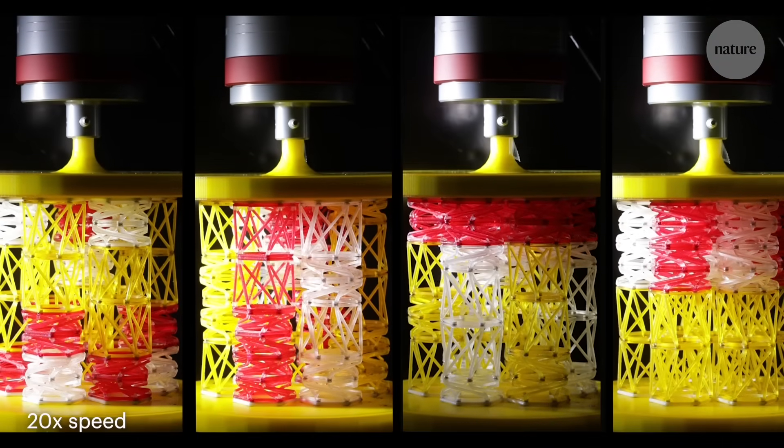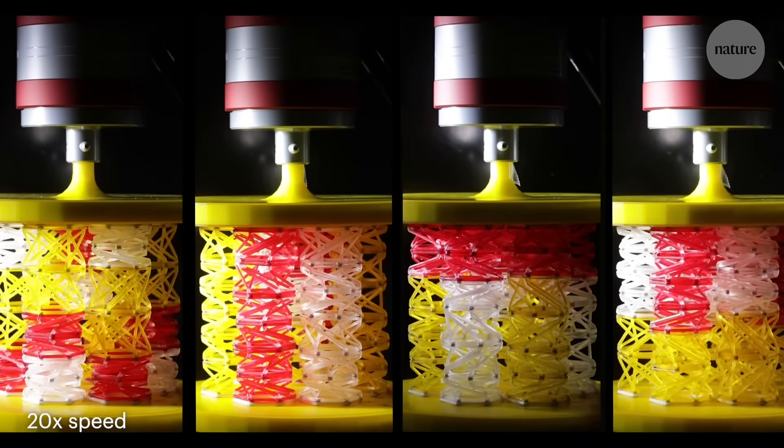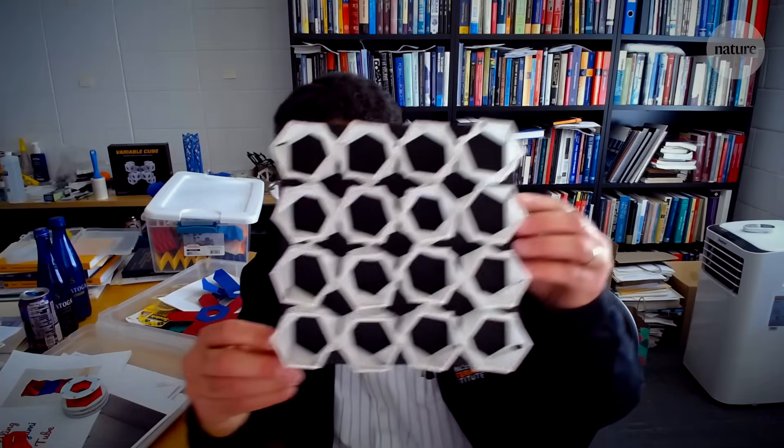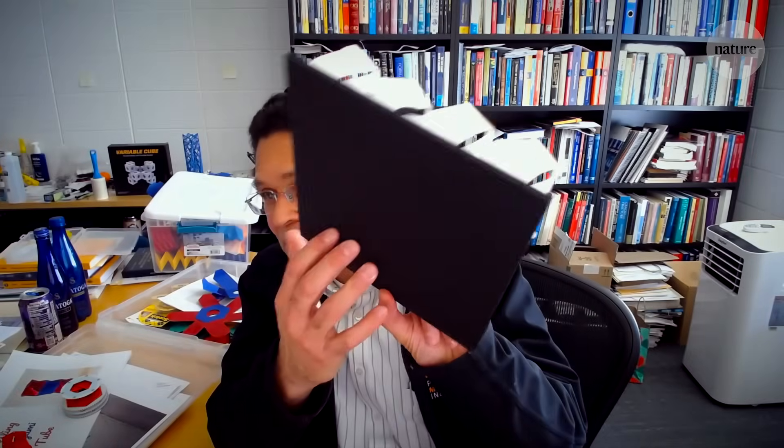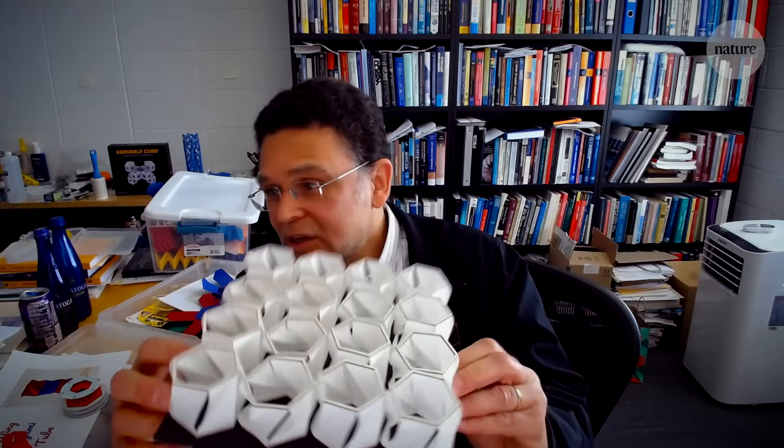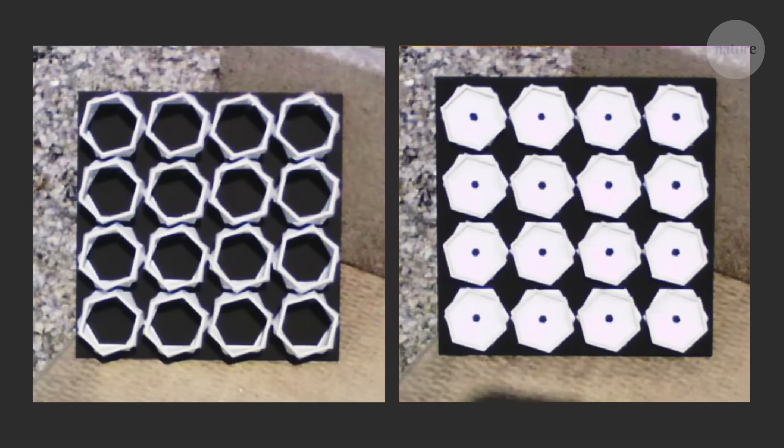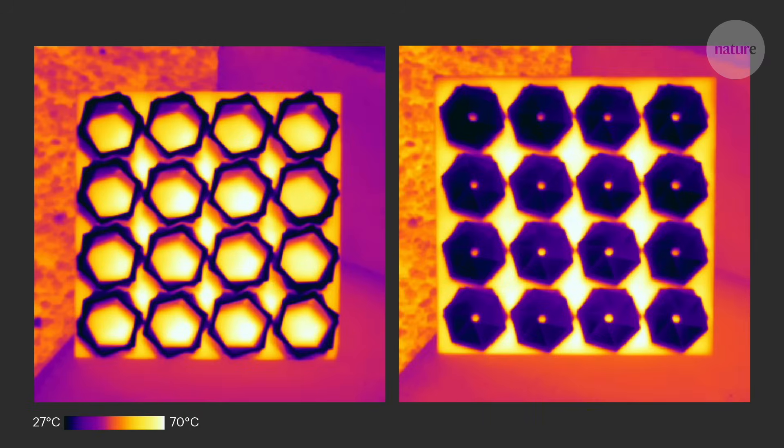These interesting properties could be used in a variety of different ways. Another idea that the team have prototyped is a panel which could help control temperature. And you see, this is a black surface, right? And the units are white. White material reflects sunlight, cooling the panel, while black absorbs it, making it hotter.